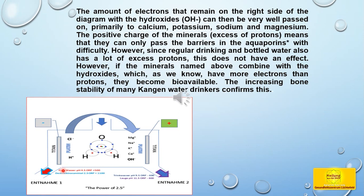The amount of electrons that remain with the hydroxides can then be very well passed on primarily to calcium, potassium, sodium and magnesium. The positive charge of the minerals — excess of protons — means that they can only pass the barriers in the aquaporins with difficulty. However, since regular drinking and bottled water also has a lot of excess protons, this does not have an effect. If the minerals named above combine with the hydroxides, which have more electrons than protons, they become bioavailable. The increasing bone stability of many Kangen water drinkers confirms this.